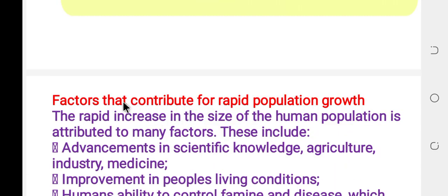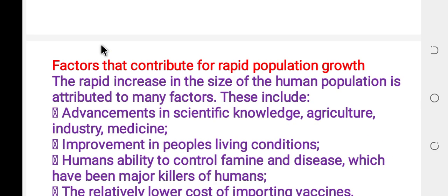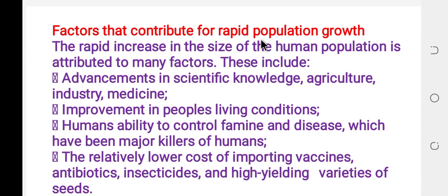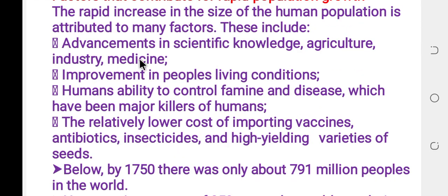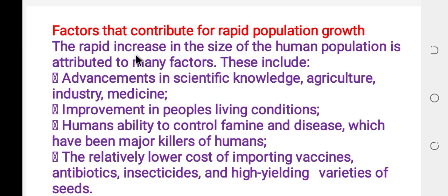Factors that contribute to rapid population growth include the rapid increase in size of human population attributed to many factors. This includes advancement in scientific knowledge in agriculture, industry, and medicine.